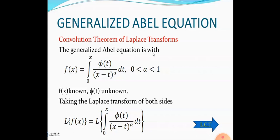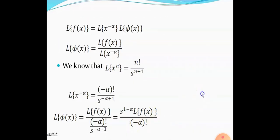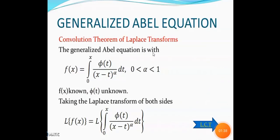We have a linear integral equation of the second kind. This is the generalized Abel equation, where the parameter alpha varies between 0 and 1. Here f(x) is a known function, and phi(t) is the unknown function. The general solution would be: f(x) is equal to the integral from 0 to x of phi(t) divided by (x minus t) raised to alpha, dt.